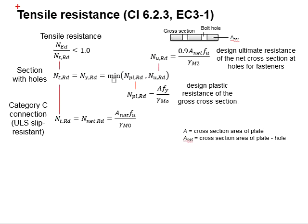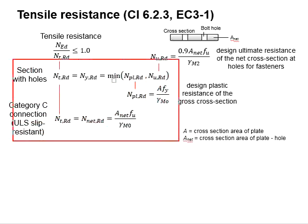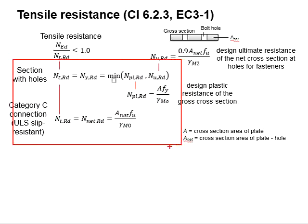To check for the tensile resistance of the plate, clause 6.2.3 may be referred. The load resistance needs to be greater than the load adding on the connections. With that, the ratio NED divided by NRD needs to be less than 1.0 so that the connections does not fail. The tensile resistance of the connections can be calculated based on the equations listed here.